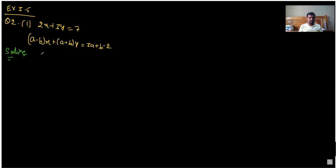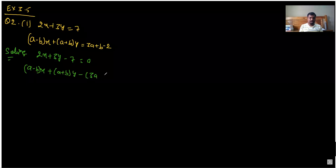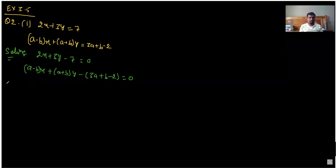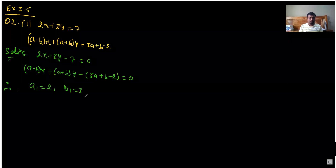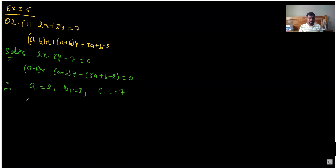So we get: 2x plus 3y minus 7 equal to 0, and A minus Bx plus A plus By minus 3A plus B minus 2 equal to 0. Therefore, A1 equal to 2, B1 equal to 3, and C1 equal to minus 7. A2 equal to A minus B, B2 equal to A plus B, and C2 equal to minus of 3A plus B minus 2.